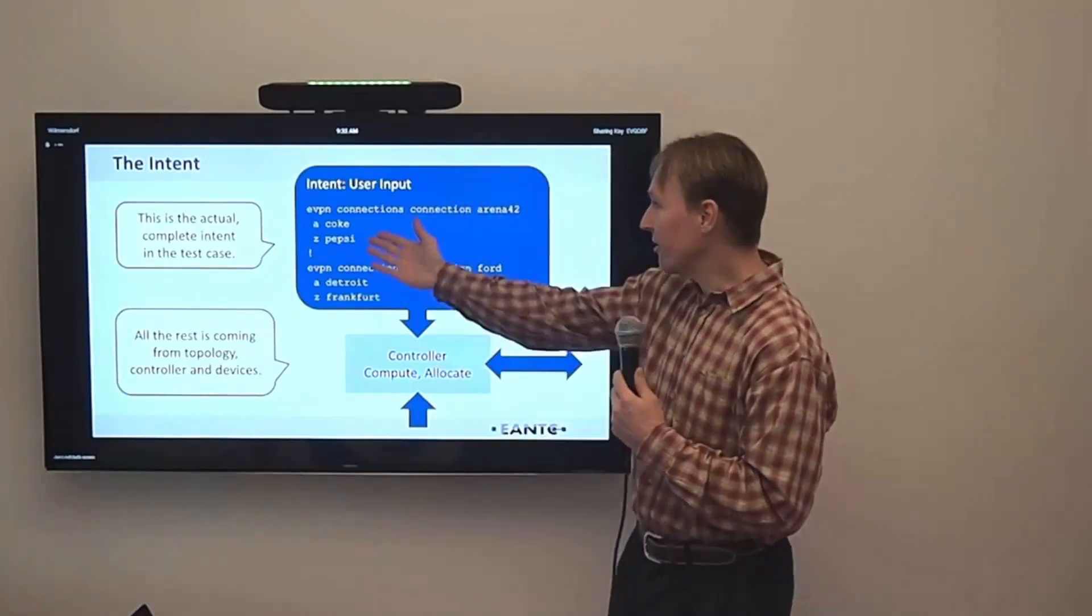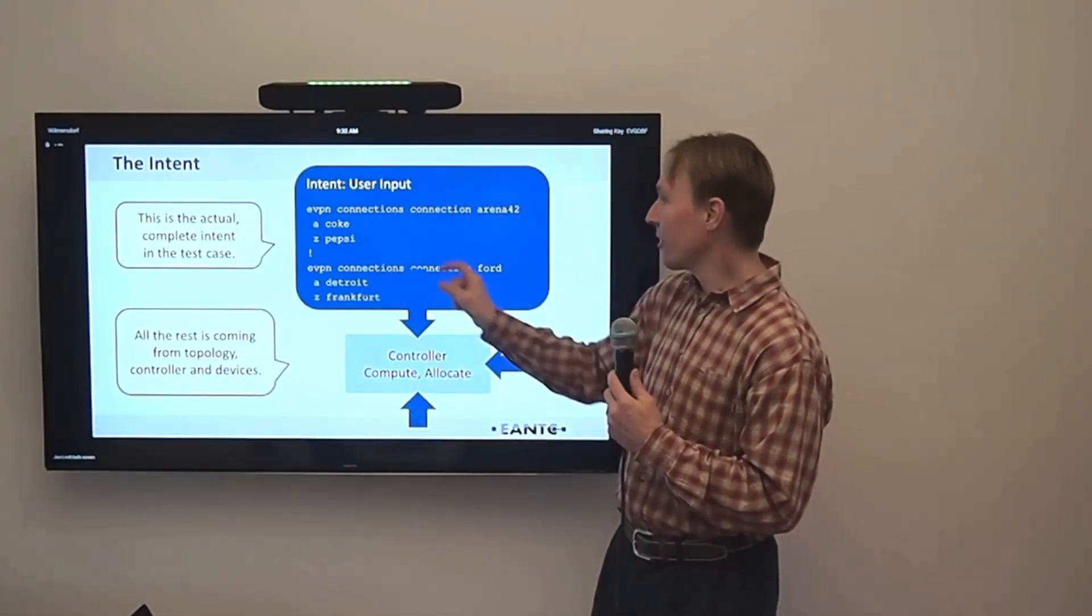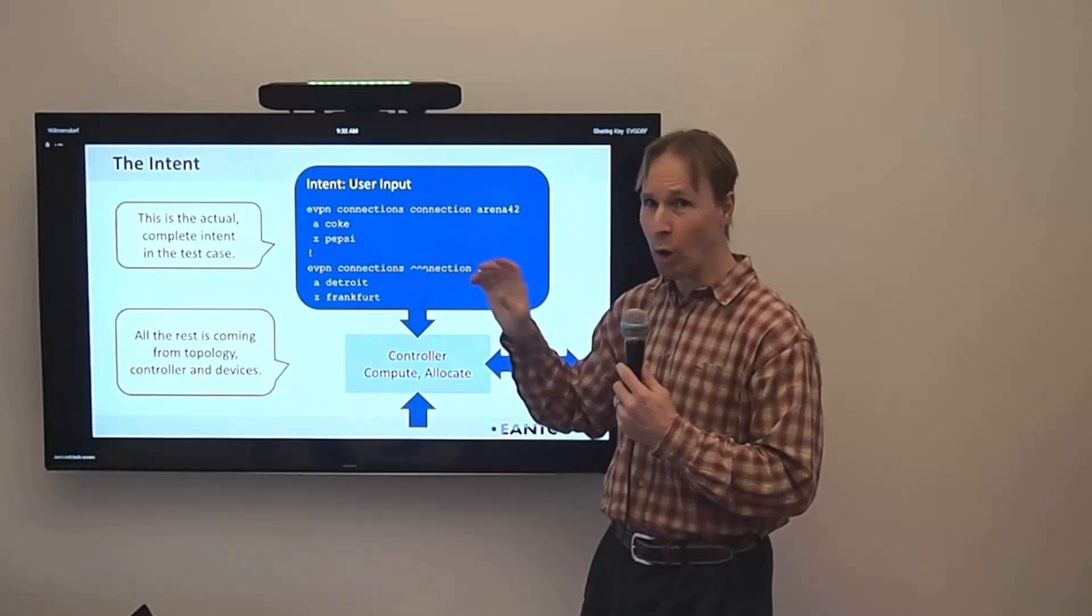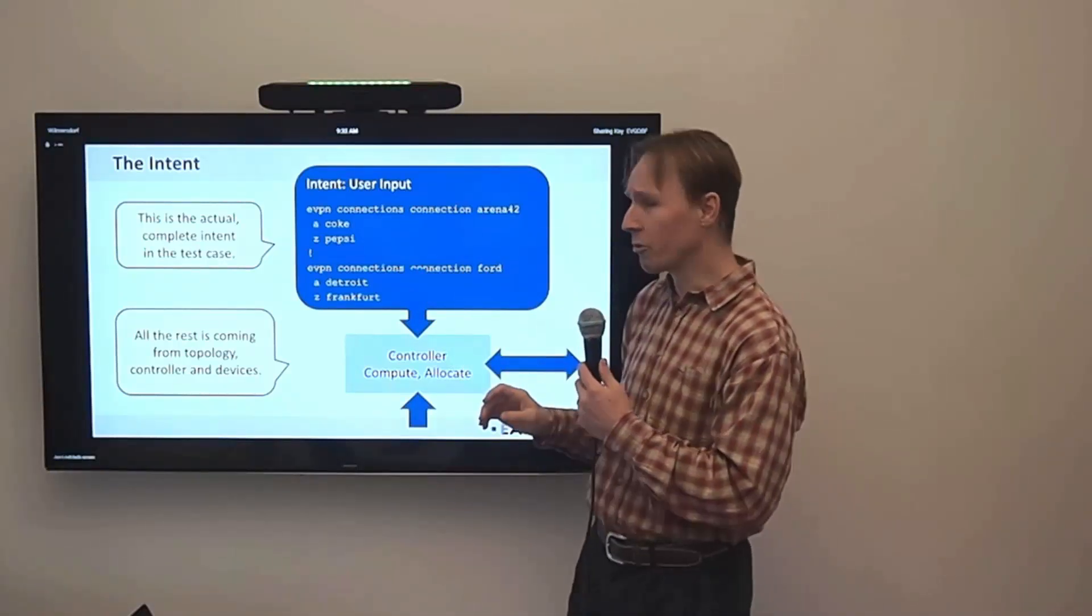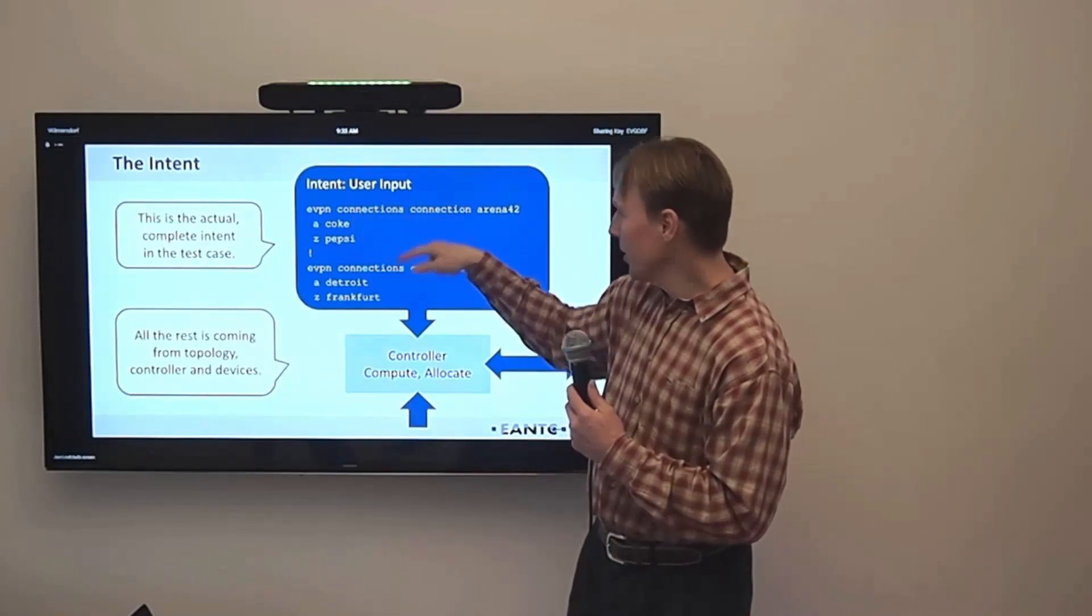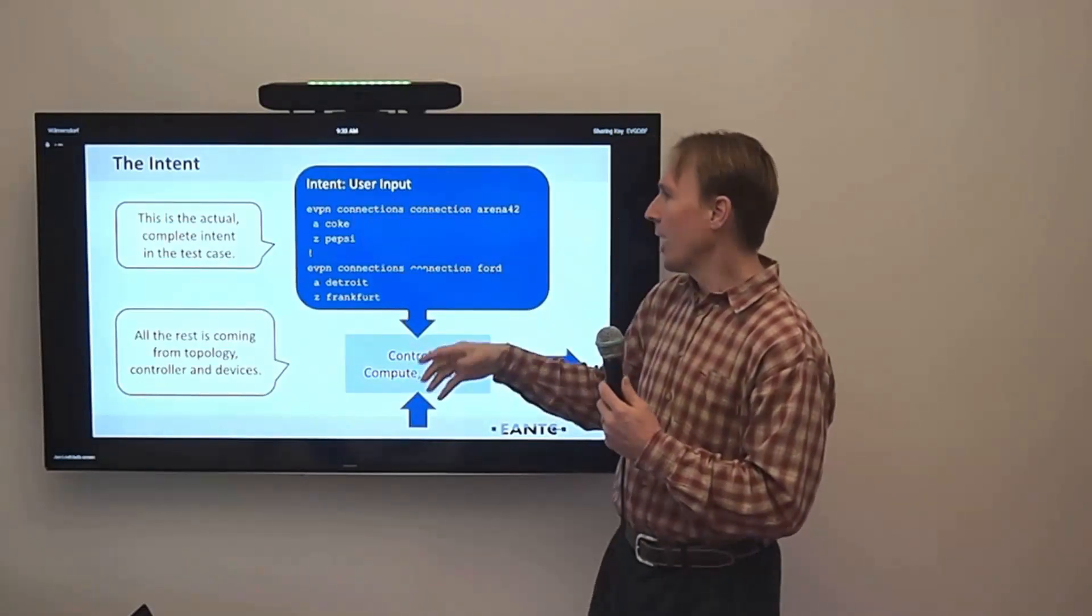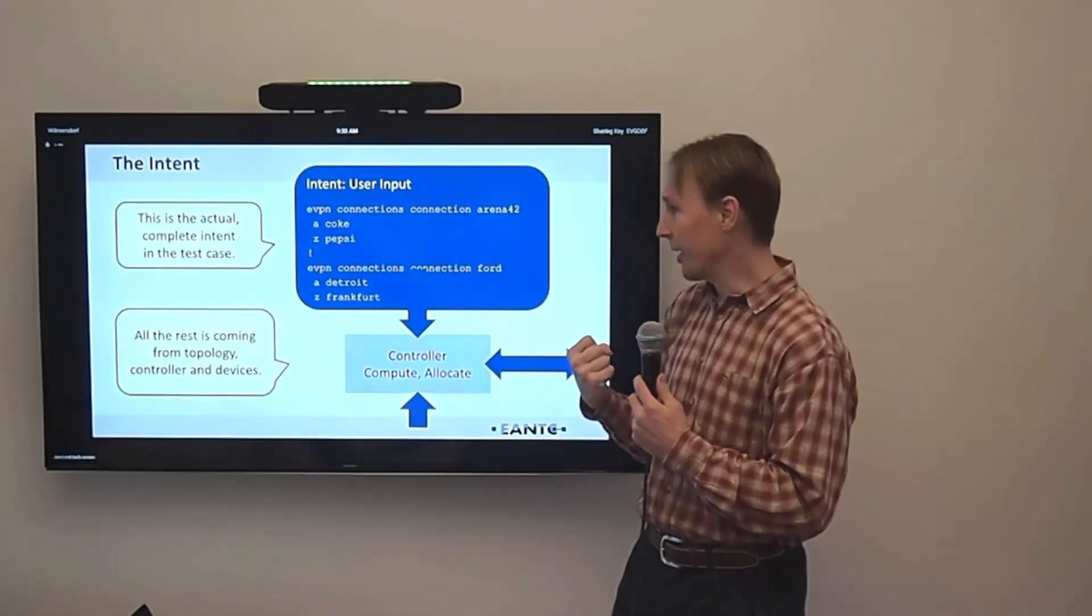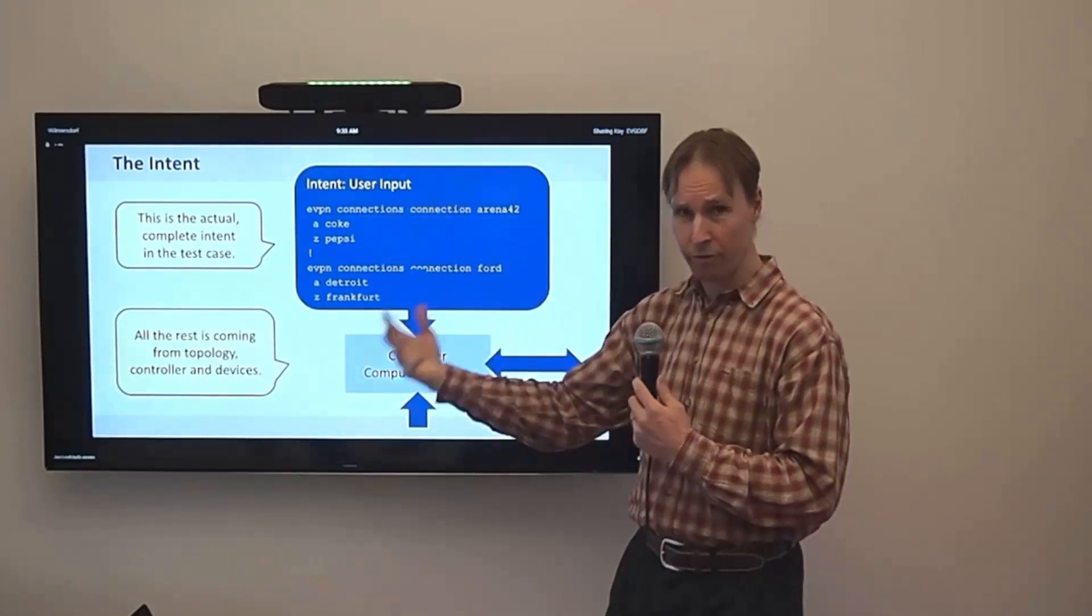If you look at the intent, this is the actual intent we are using. It is just two lines for each one. There's no IP addresses. There's no details about route distinguishes or anything. So, you just say that I want to have a connection from here to there or from Detroit to Frankfurt. And it's the controller that will need to decide, how do I realize this in terms of the equipment I have available?